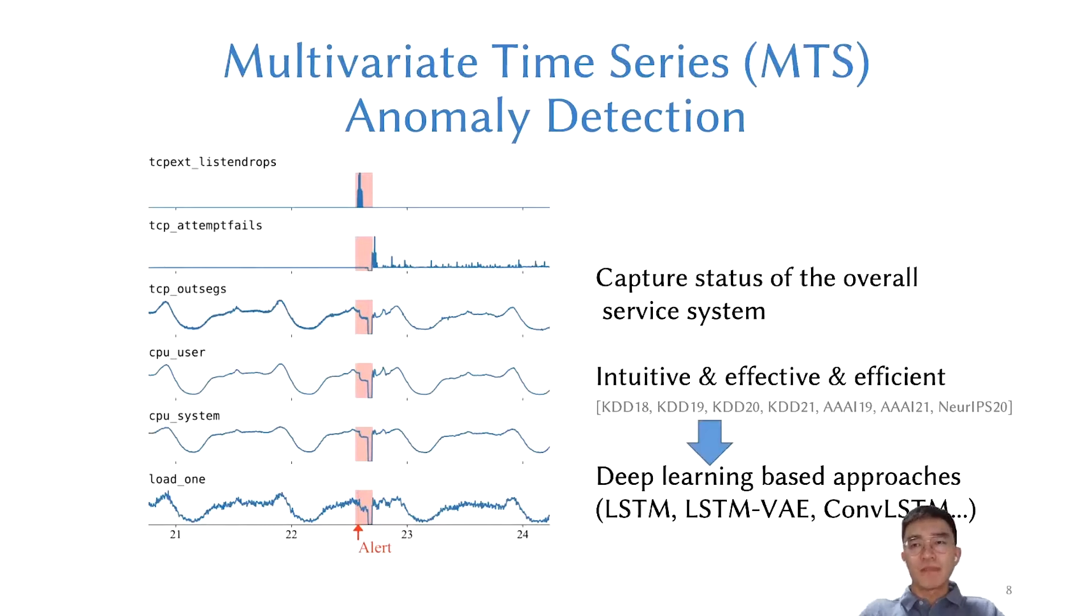To model the expected status of service, almost all MTS anomaly detection approaches use deep learning-based techniques, such as LSTM, LSTM-VAE, and convolutional LSTM, because of the ability to learn a normal pattern from existing data.